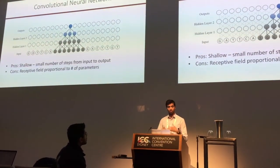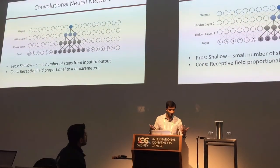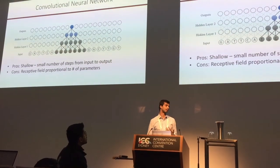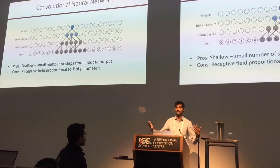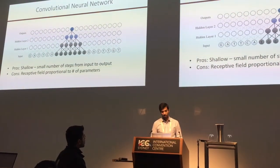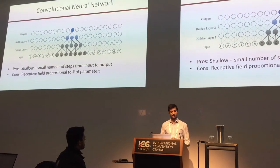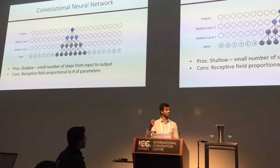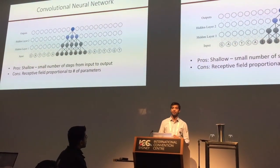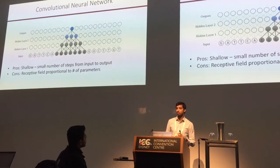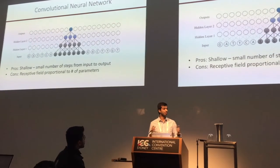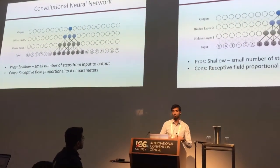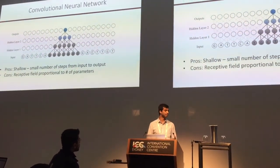The benefit of a shallow convolutional network is that it's very easy to train — with three layers, we don't suffer the vanishing gradient problems often seen with very deep networks. The drawback is the receptive field size, which is the set of inputs that affect each output, is proportional to the number of parameters. If I want to grow the receptive field to account for really long-term dependencies, I have to proportionally increase the number of parameters, which makes models big, hard to train, and slow.